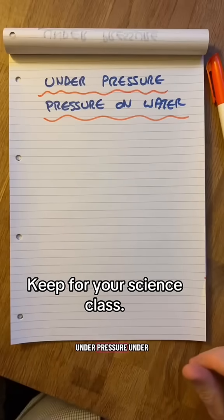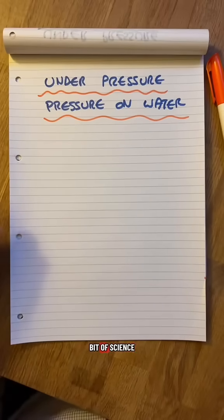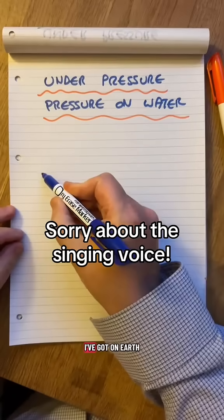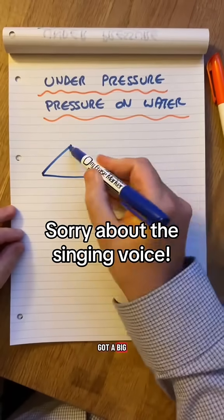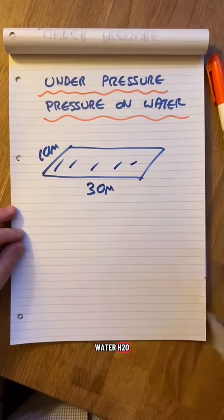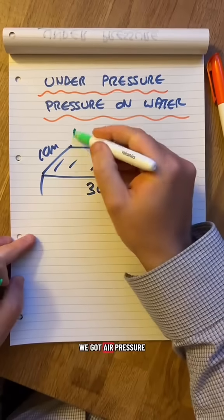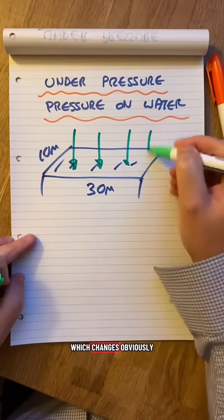A bit of science under pressure. Pressure on water. So let's pretend I've got a big swimming pool on Earth, 30 meters by 10 meters, water H2O. On Earth we've got air pressure which changes obviously.